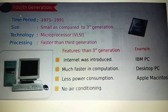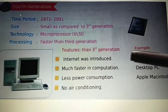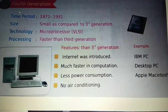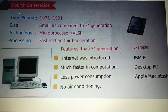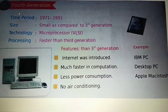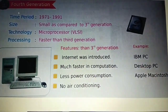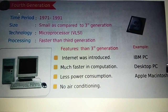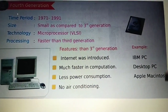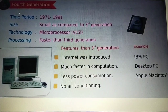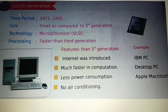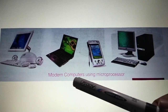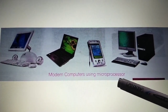Let us see some more features of the fourth generation computer. The internet was introduced, and computation is much faster. Next is less power consumption — they need only less electricity and no air conditioning. Some examples of fourth generation computers are the IBM PC, desktop PC, and Apple Mac. Modern computers using microprocessors are also examples of fourth generation computers.